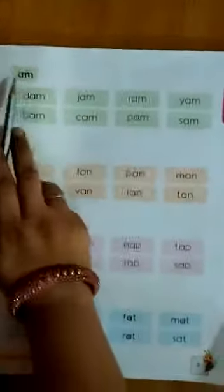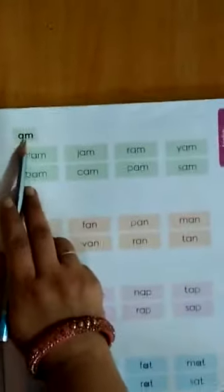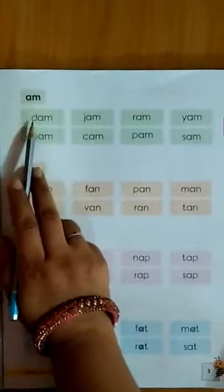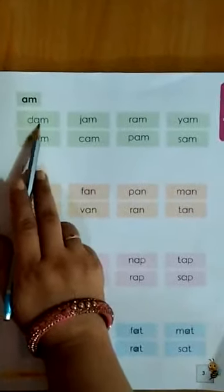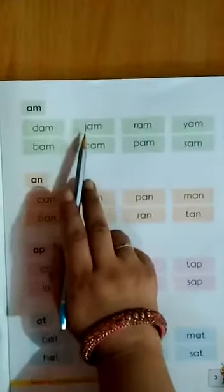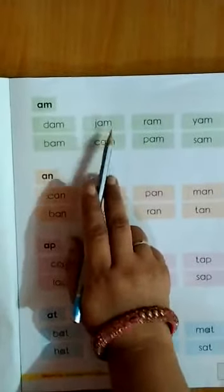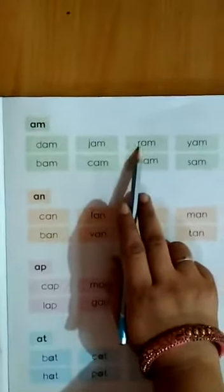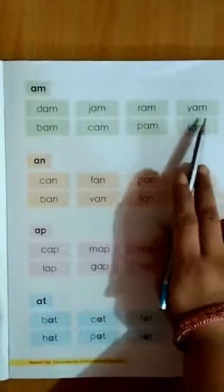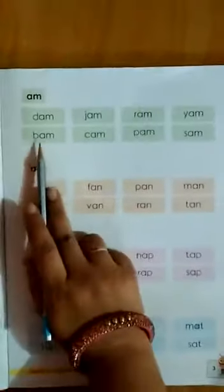A-M cluster words. A-M. D-am: dam. J-am: jam. R-am: ram. Y-am: yam.